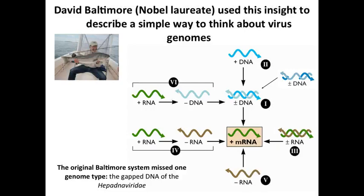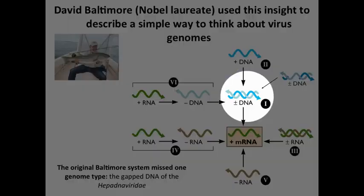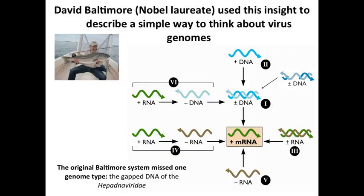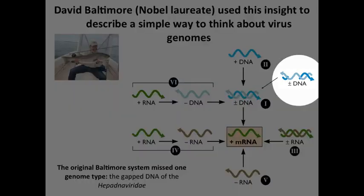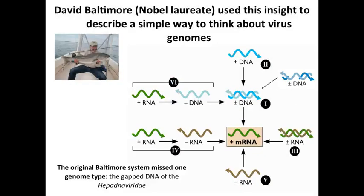He also included double-stranded DNA. All the numbered ones he got, but at the time he made this scheme, the hepatitis B virus genome wasn't known, so it was added later — a funny double-stranded DNA with gaps. He said all of these have to go to mRNA, and arranged them in this rubric which, if you learn it, will help you enormously. Given a viral genome, you'll be able to figure out how it's expressed.